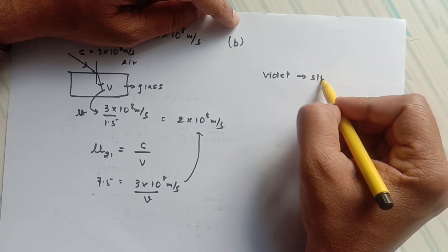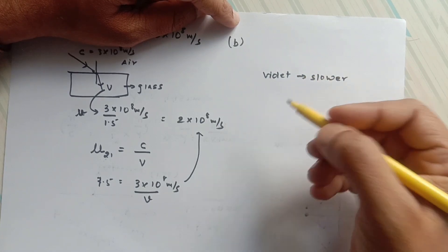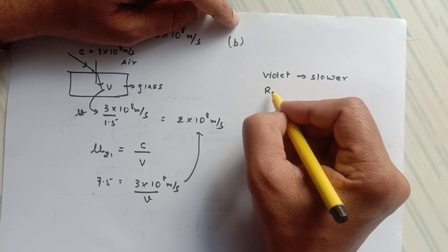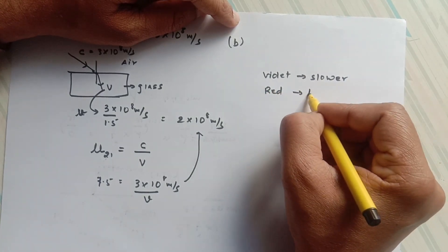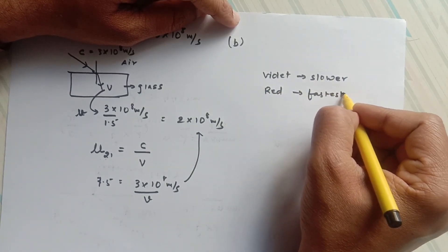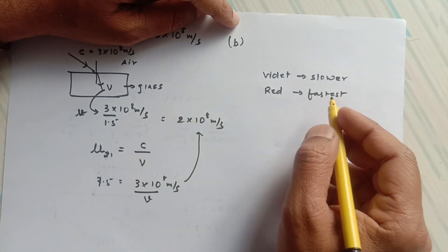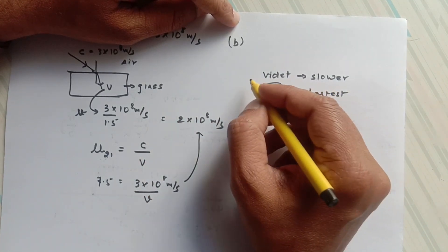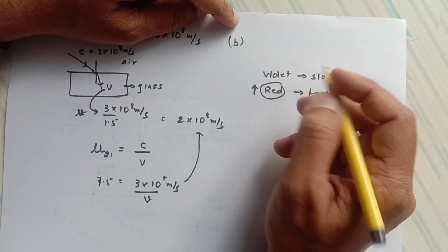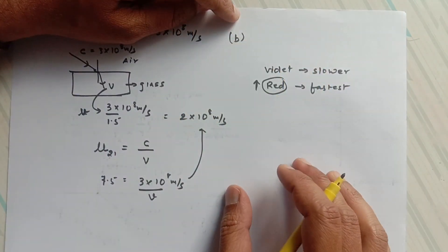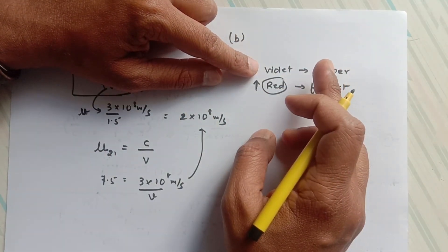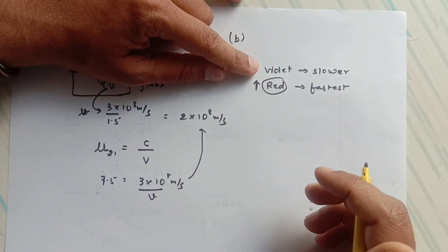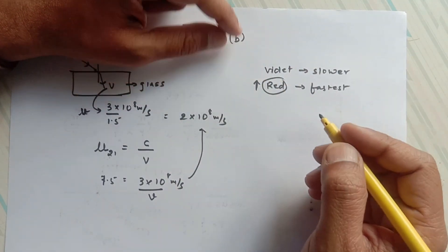...travels slower in all mediums except air, and red is the fastest. So out of all the seven colors, red travels fastest compared to other colors in all mediums except air, because in air or vacuum, ideally in vacuum, all colors travel with the same speed, that is 3 × 10⁸ m/s.